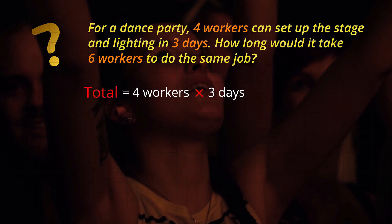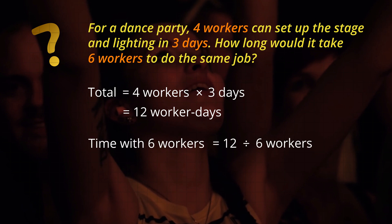First we multiply to find the total to do the job. Four workers taking three days means that they take 12 worker days to set up the dance party. But with more workers the time to do the job will be less, so we divide the total by six workers to get an answer of two days to do the same job.